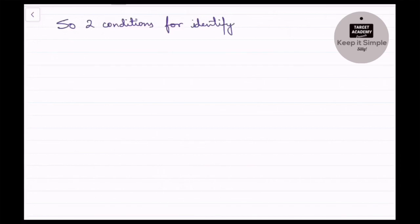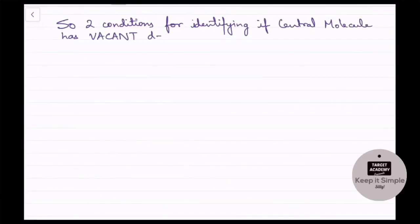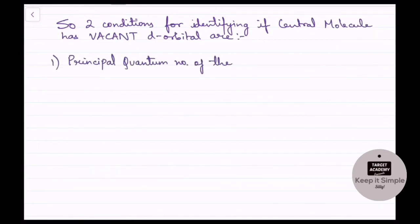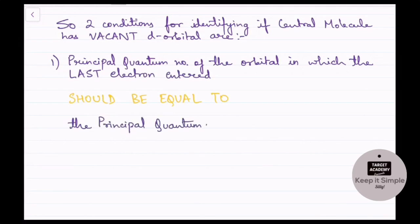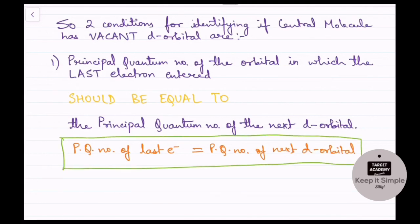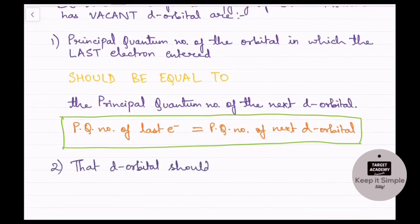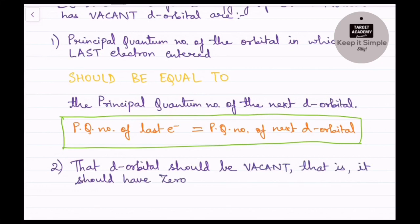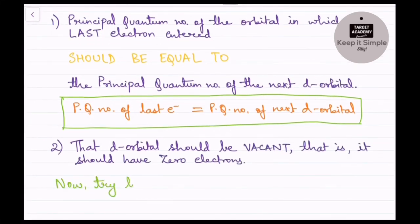Let's write down the two conditions for identifying if a central atom has a vacant d orbital. Condition one: the principal quantum number of the orbital in which the last electron entered should be equal to the principal quantum number of the next d orbital — meaning the d orbital that comes after the orbital in which the last electron entered. In PCl5, last electron entered 3p and next d orbital is 3d — both have principal quantum number 3, so condition one is satisfied. Condition two: that next d orbital should be empty, having zero electrons. If both conditions are satisfied, the atom has vacant d orbitals.